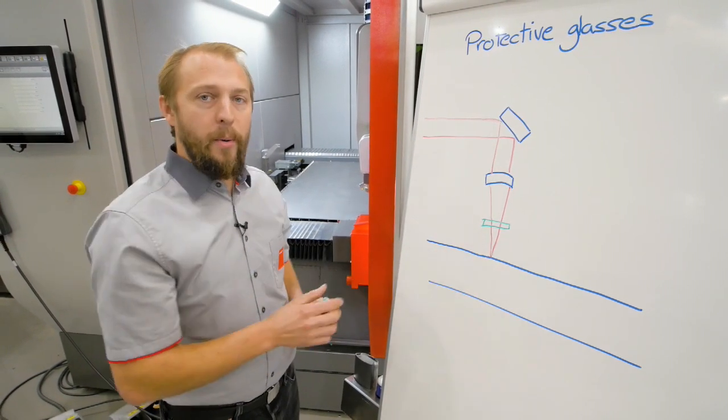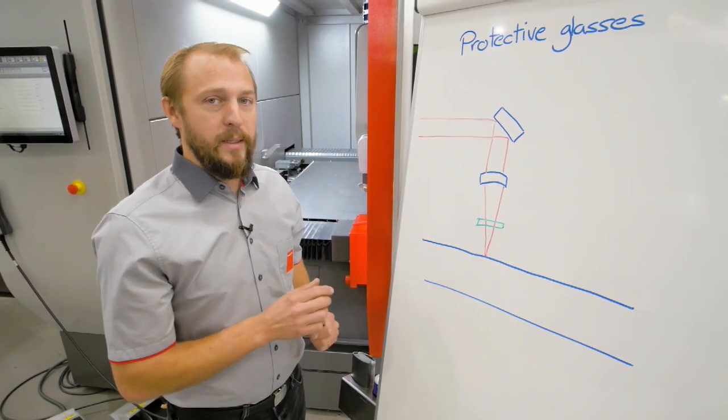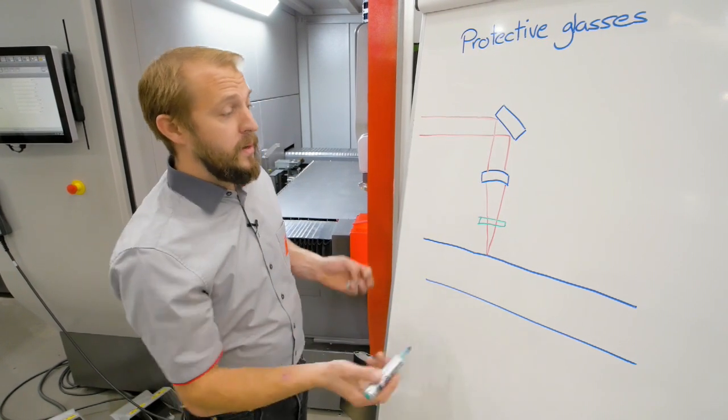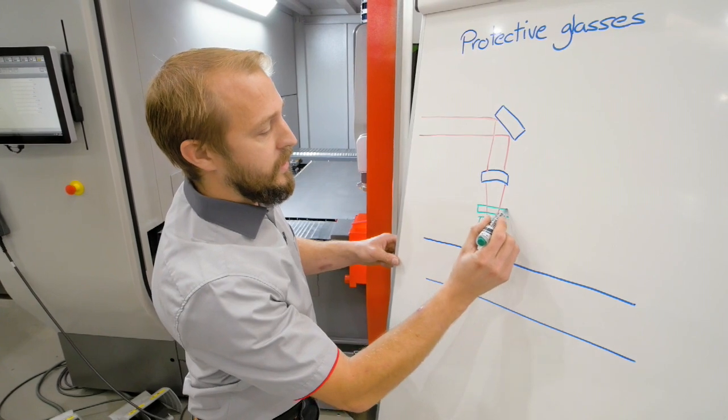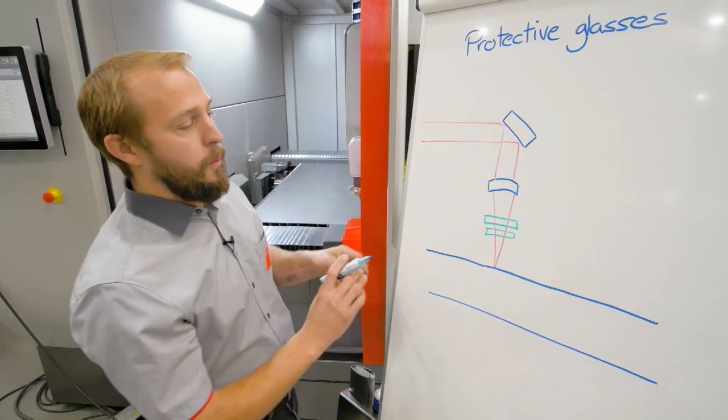This is a wear part that you have to replace from time to time. Of course, while replacing this protective glass, there is still a risk of contamination of the optical room. That's why we added here a second protective glass, which is really protecting our optical room.